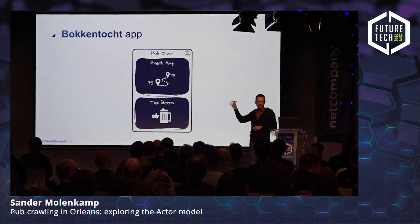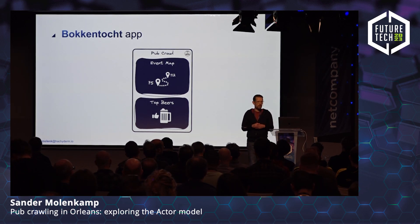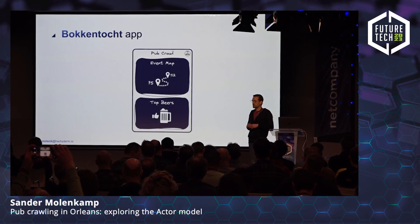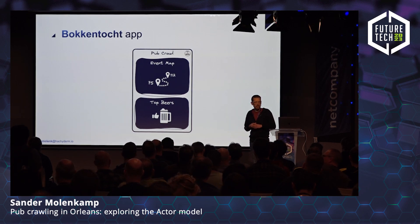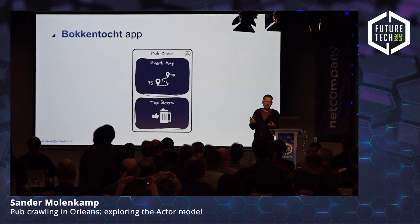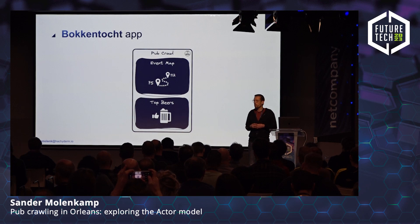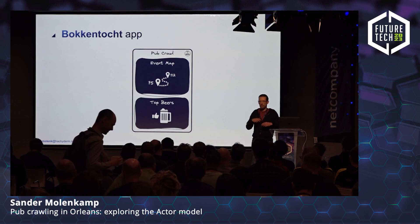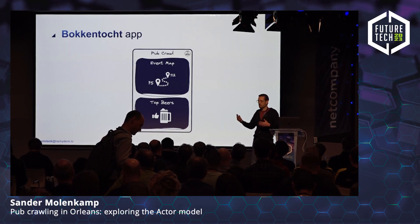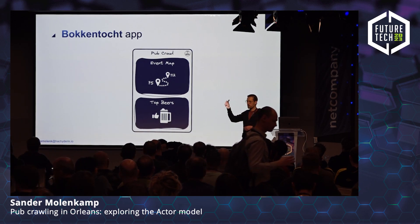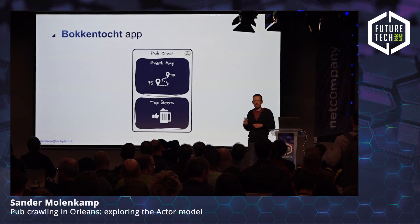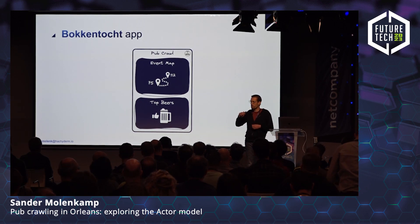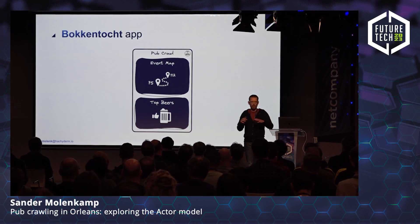This is the general idea. You would have a home screen with an event map at the top, displaying all the different venues you can go to in this specific event. Attendees — or crawlers as I call them — can check in and out of these venues. We can render a count per venue on the map so you get an idea of how busy it is. Below that we can also have a high score of all the best beers.